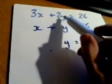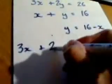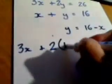Now I'm going to use this to replace the y in the first equation and you'll see the effect of this. So rewriting that first equation I get 3x plus 2 lots of, and y this time is 16 take away x, and that will equal 26.